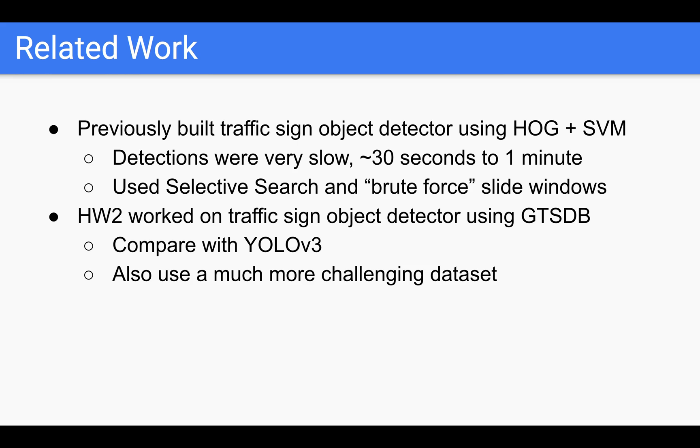For related work, I previously built traffic sign object detector using a method called HOG plus SVM. Essentially what this means is we extracted histogram of oriented gradient feature vectors out of patches of an image that contains a traffic sign and fed that into an SVM as positive training cases. And we also extracted out negative sample patches that did not contain traffic signs as negative cases. We basically trained a linear binary SVM to classify if an image patch contains a traffic sign or not.